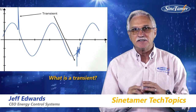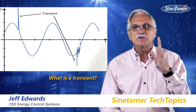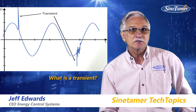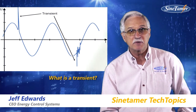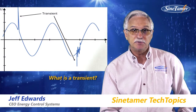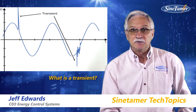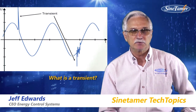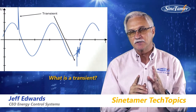By definition, a transient is a rapid excursion of the voltage from the sine wave itself. It can happen typically for a switching transient between 0.2 to 1 microsecond. Larger transients, we might call surges, which could be maybe a couple of microseconds. But the idea is there's a change in the fundamental frequency of the sine wave. When that sine wave changes, that becomes a transient.